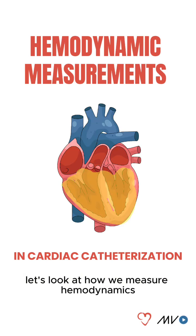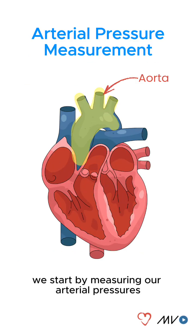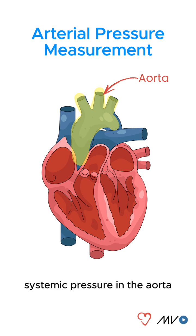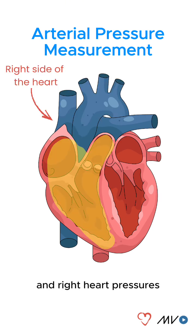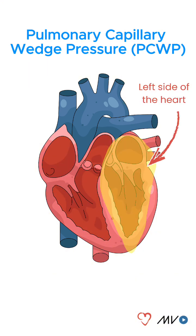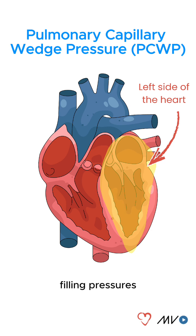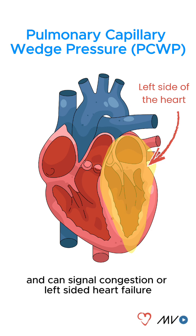Let's look at how we measure hemodynamics during a cardiac catheterization. We start by measuring arterial pressures — systemic pressure in the aorta — and right heart pressures, including pulmonary artery and capillary wedge pressure. Pulmonary capillary wedge pressure gives an indirect view of left-sided filling pressures and can signal congestion or left-sided heart failure.